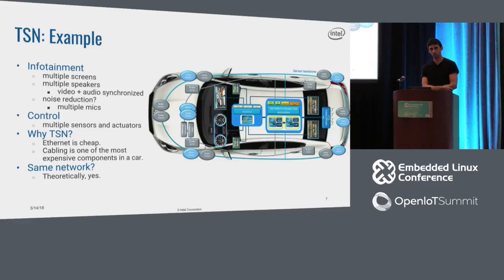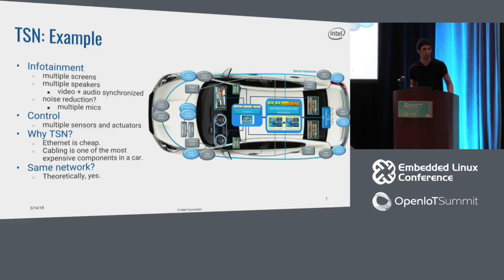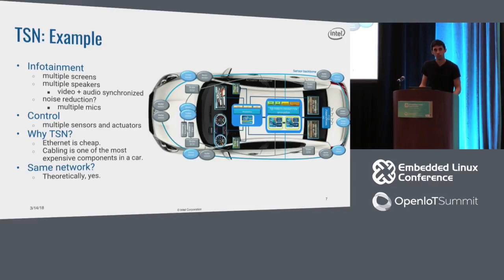Why TSN? Why are people moving away from field buses to use this new set of technologies? It turns out that Ethernet is super cheap — the Ethernet MAC is cheap, cabling is cheap, and it's already everywhere. I was told that cabling is one of the most expensive components when building a car because you have different types. Theoretically, with TSN all this traffic can live on the same network — I say theoretically because I work for Intel, not a car company.